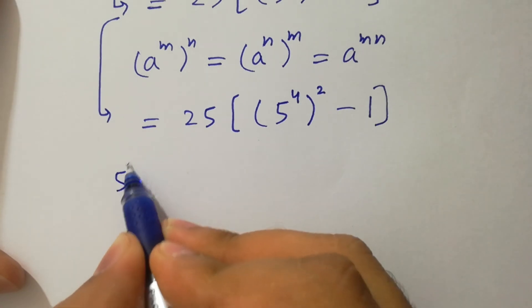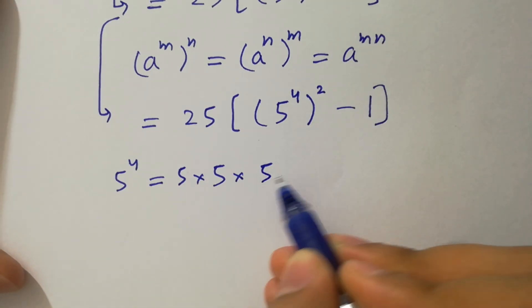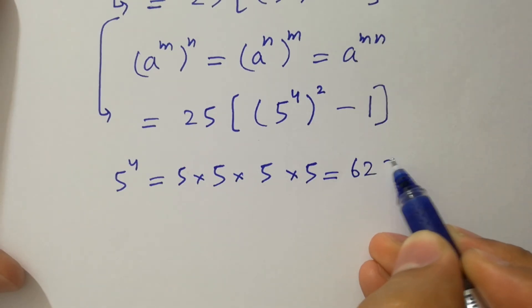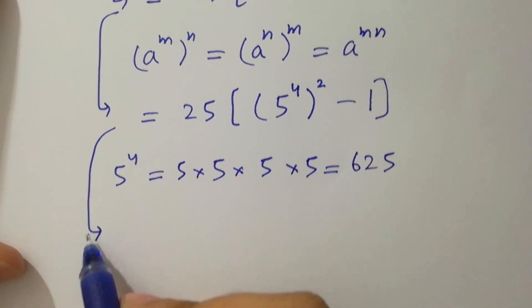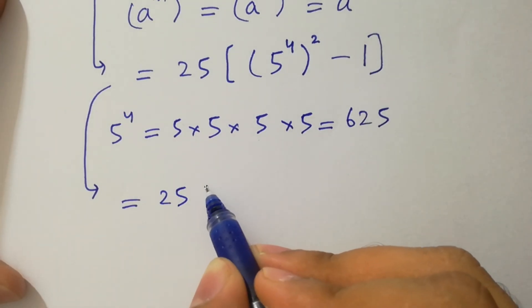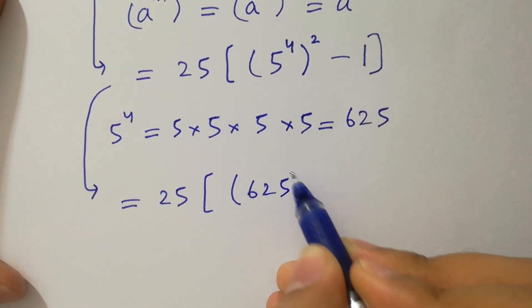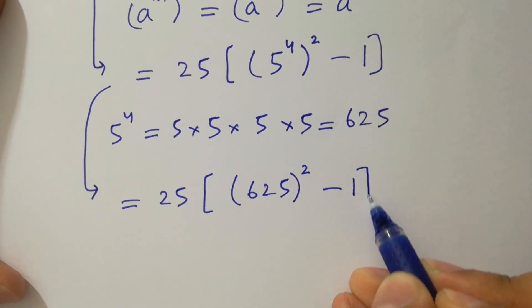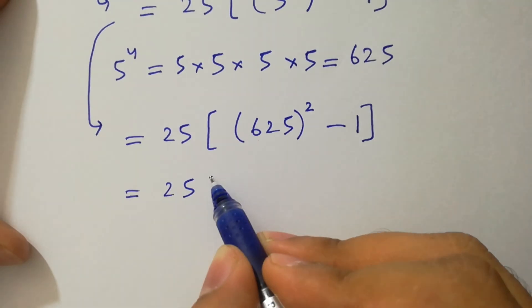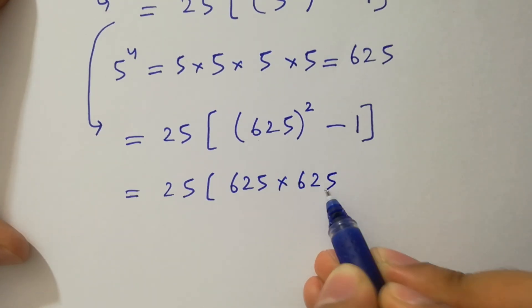Now, 5 to the power 4 equals 5 times 5 is 25, 25 times 5 is 125, and 125 times 5 is 625. So it becomes 25 times 625 to the power 2 minus 1, which is 25 times 625 times 625, minus 1.